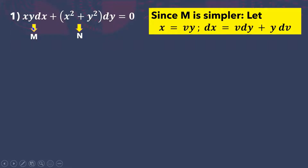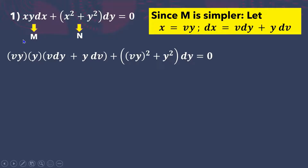Since M is simpler than N, we let x = vy and dx = vdy + ydv. The next step is to substitute vy in for the variable x and vdy + ydv in for dx. So substituting: x becomes vy times y, dx becomes vdy + ydv, plus x becomes vy squared, plus y squared dy equals zero.